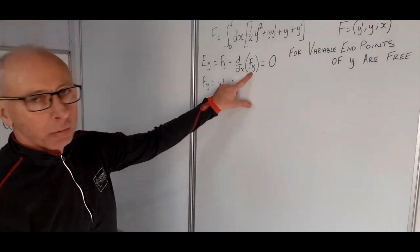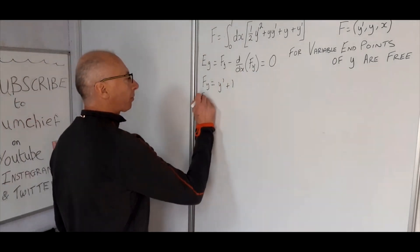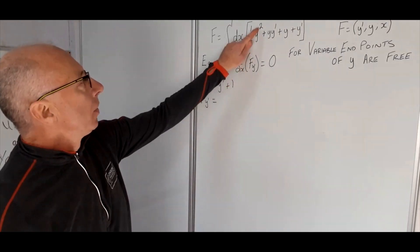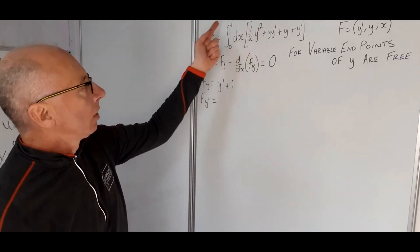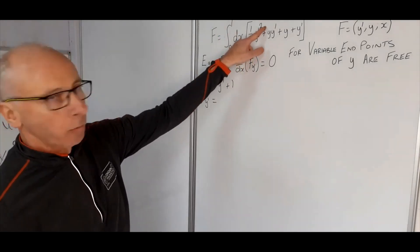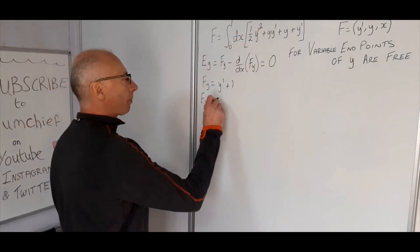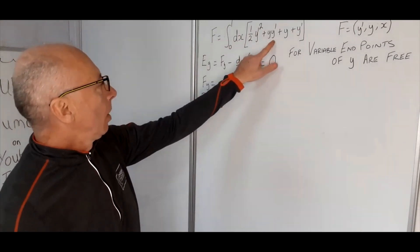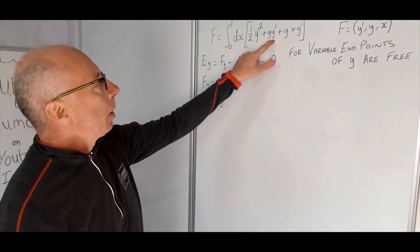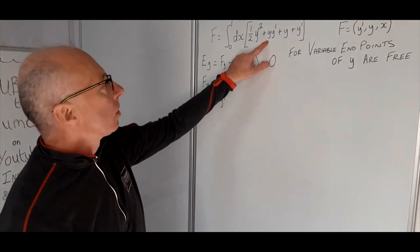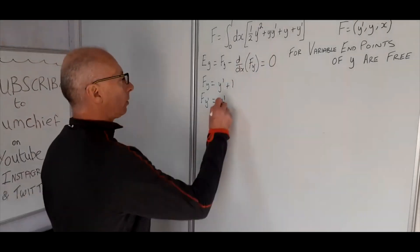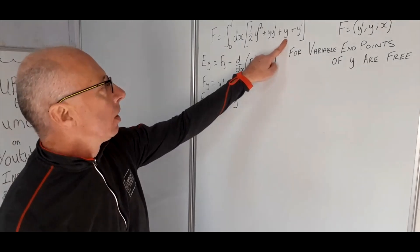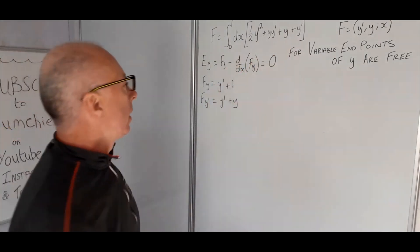Now the second part: we'll take the partial with regards to y prime. For the y prime squared term, bring the 2 out front — 2 over 2 gives us a 1 — and y prime squared just becomes y prime. For the y·y prime term, y prime is what we're differentiating, so y is the constant multiple, leaving us with y. The constant term we can disregard, and the remaining term leaves us with a 1.